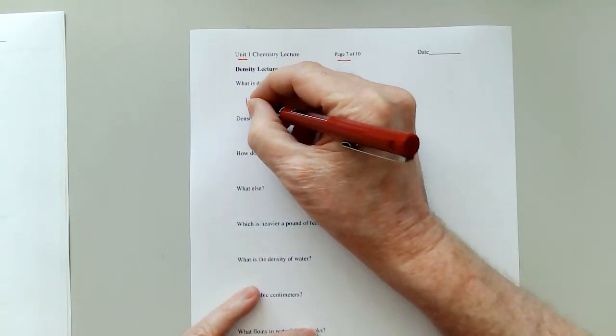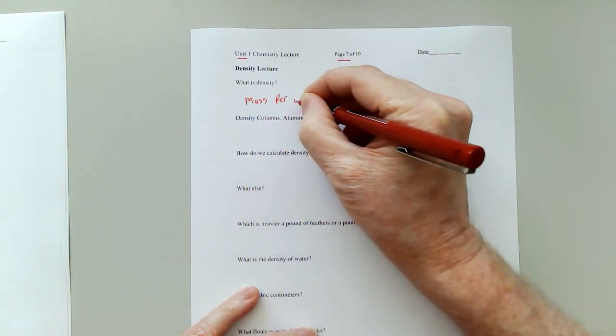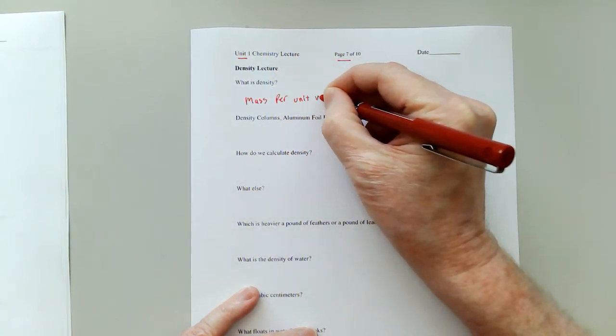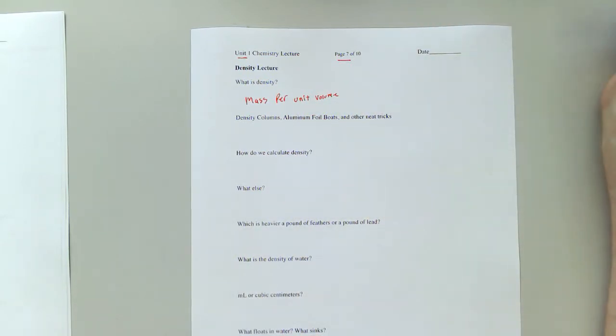So what is density? Density is mass per unit volume. That means how much stuff is in a given volume. A lot of people confuse density for weight, and that is not true. It's the amount of stuff in every specific volume that we make reference to.